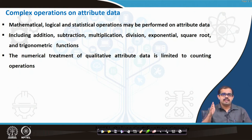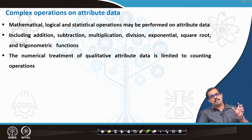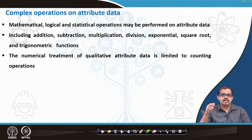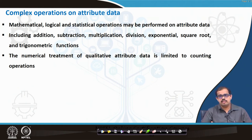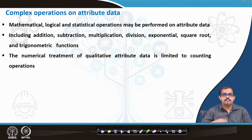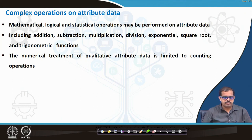The only consideration is what kind of data — you cannot have an attribute data mentioning names of people and do a mathematical operation on that, which is not possible. So look at the logic behind that particular attribute, why it is placed there, and based on that you can do any kind of operations, including addition, subtraction, multiplication, division, exponential analysis, square root, and trigonometric functions. The numerical treatment of qualitative attribute data is limited to only counting operations.